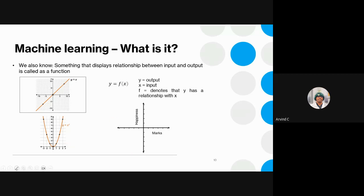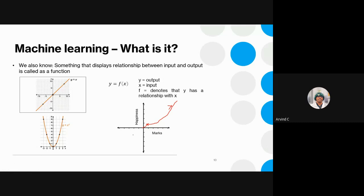A practical example of functional relationships: if I get low marks, I'd be sad; high marks, very happy — a roughly linear relationship. An S-grader, however, is sad for almost all below-average marks and only becomes happy above 85–90. This is the functional representation of an S-grader versus an average student — a fun visualization of what functions are.